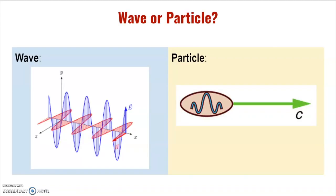Before we talk about whether light is a wave or a particle, let's frame our mindset and discuss what we mean by those terms. When we discuss light being a wave, we're referring to it as an electromagnetic wave, with an electric field shown in blue perpendicular to a magnetic field shown in red, and changes in one field induce changes in the other, as we saw with motors and generators.